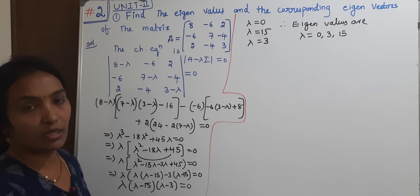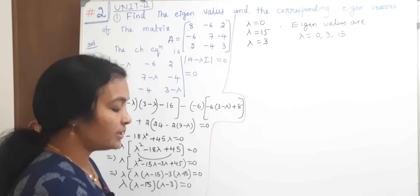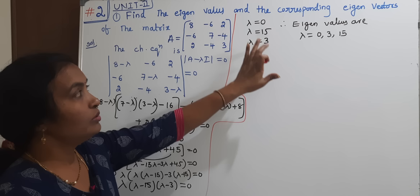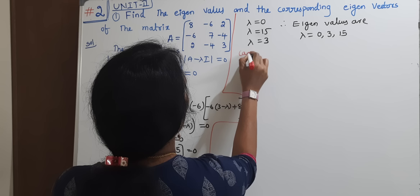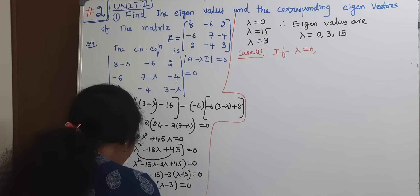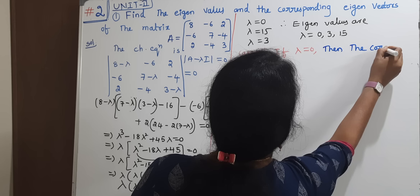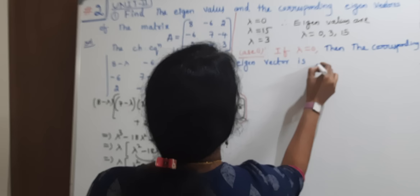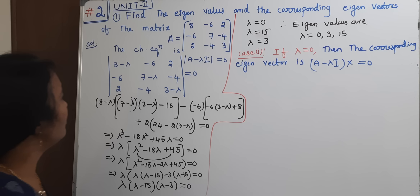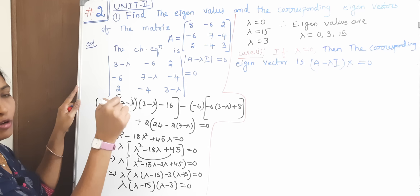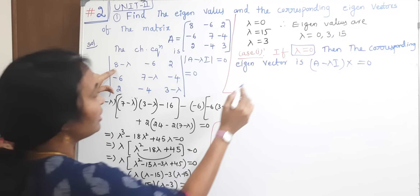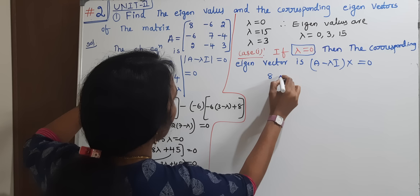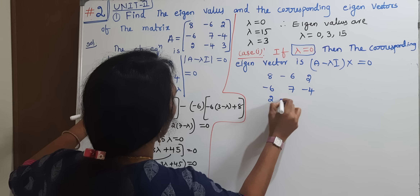Now finding eigenvectors corresponding to each eigenvalue. For eigenvalue lambda equal to 0, using (A minus lambda I) times x equals 0. Substituting lambda equal to 0 into the matrix: 8x1 minus 6x2 plus 2x3, with 7x2 minus 4x3, and 2x1 minus 4x2 plus 3x3.